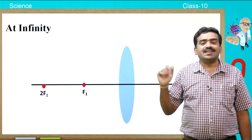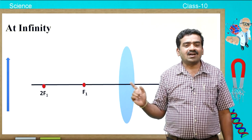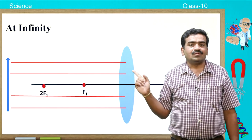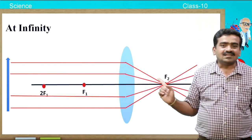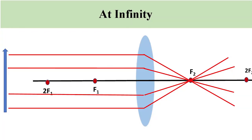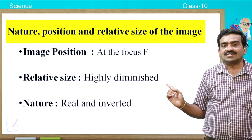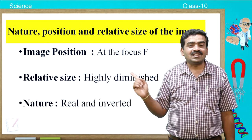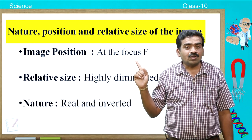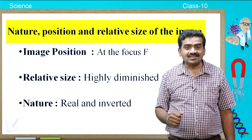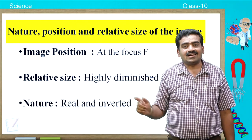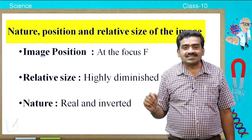When the object is placed at infinity — that means far away from the convex lens — the ray of light coming from the object reaches the lens and after refraction, the refracted rays converge at a point called the principal focus. The image position is at F, meaning the image is formed at the principal focus on the other side of the lens. The relative size is highly diminished, and the nature of the image is real and inverted.